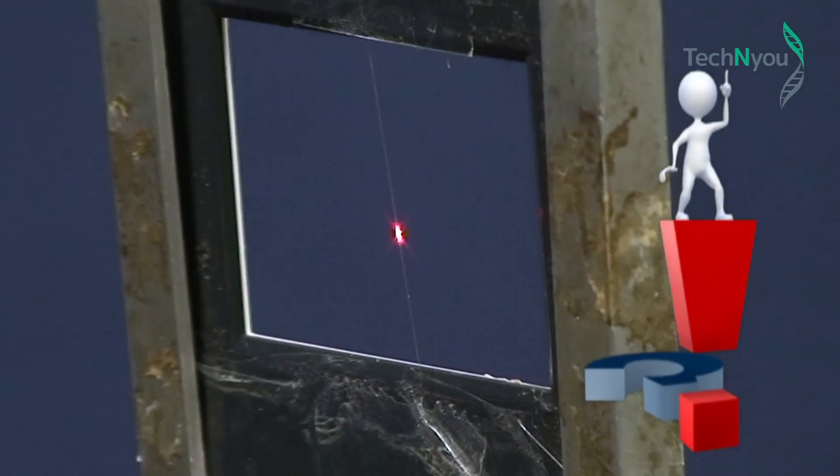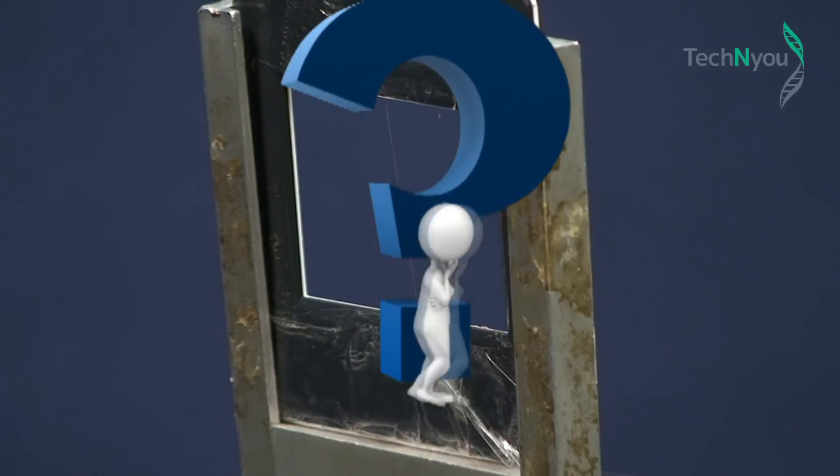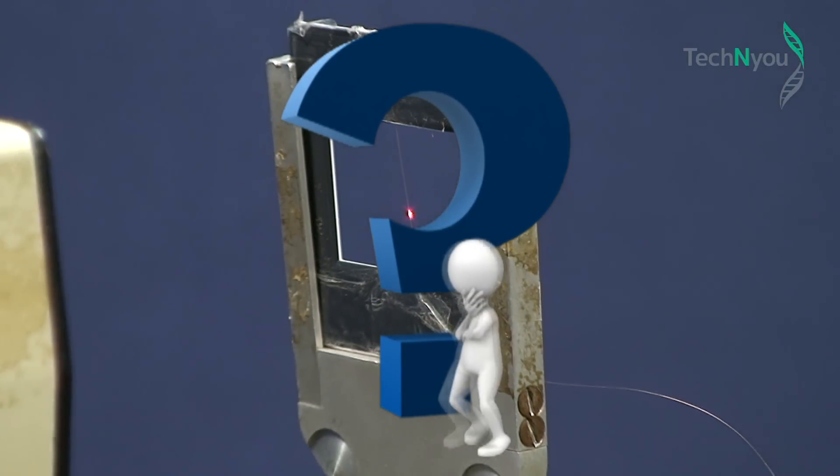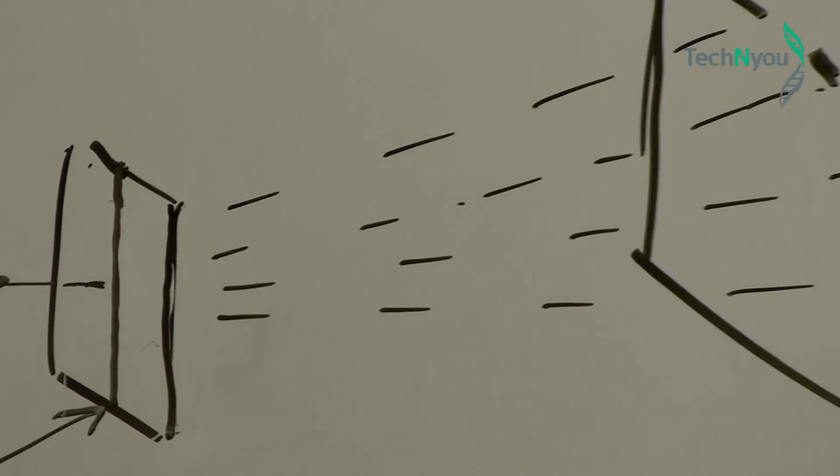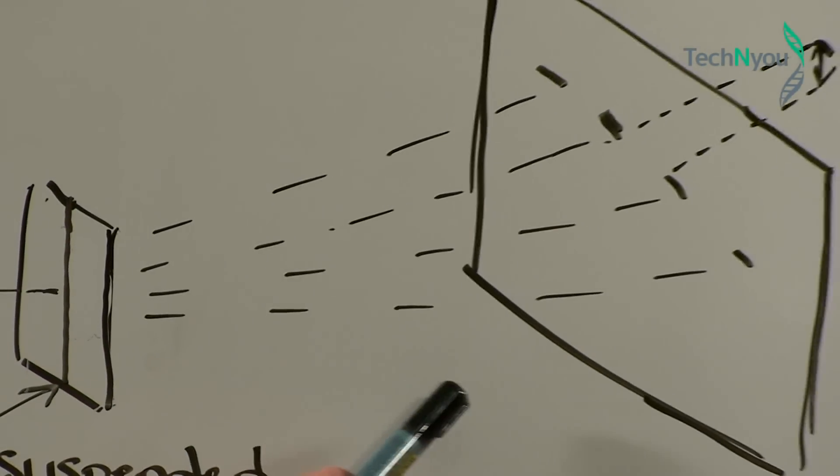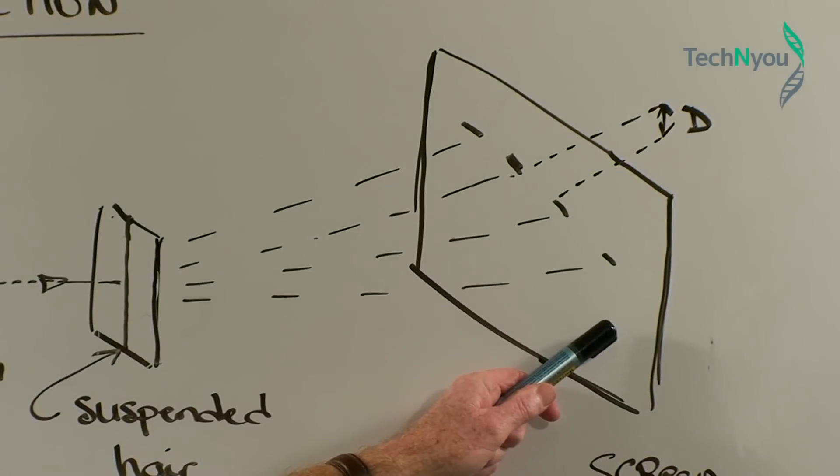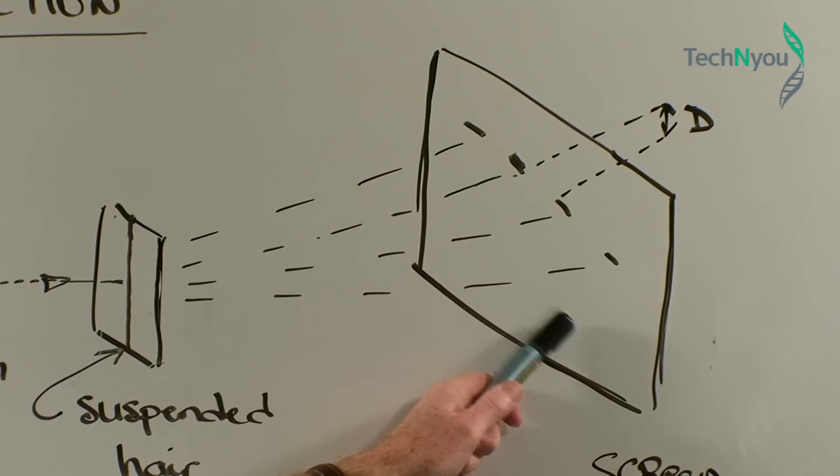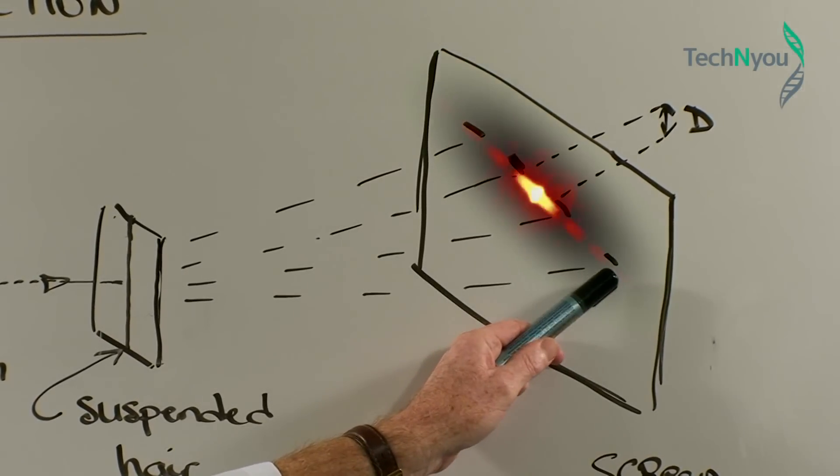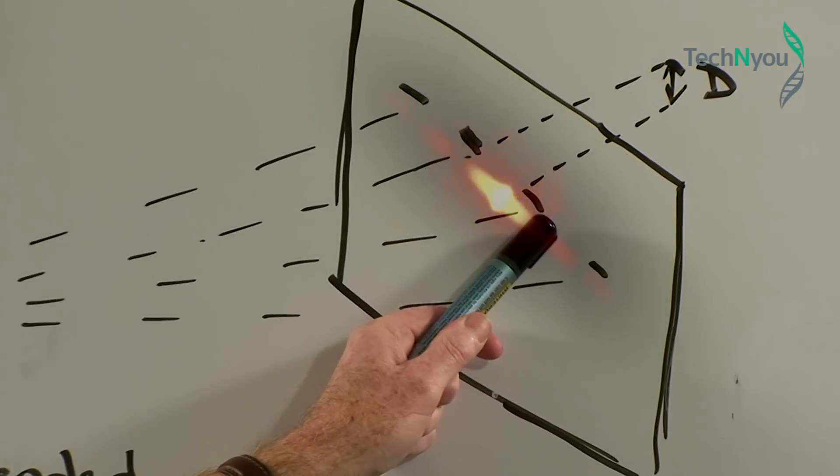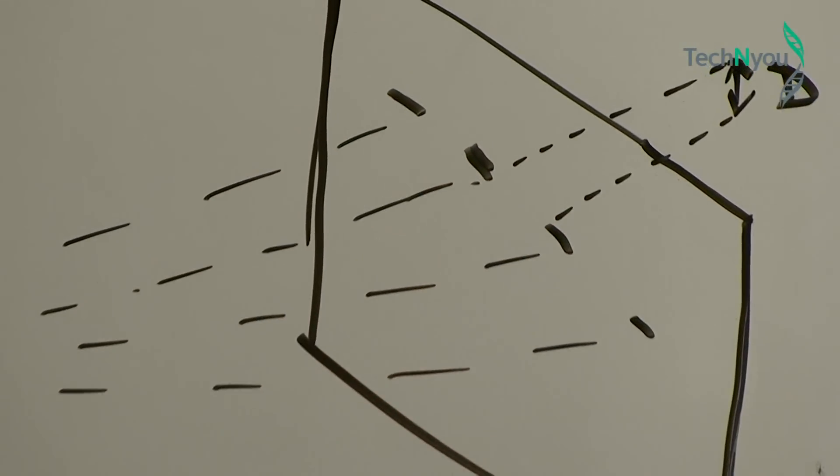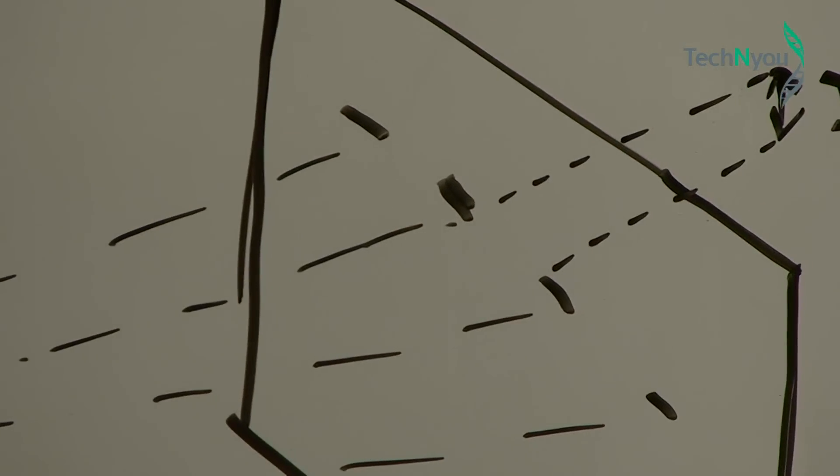That's how we do it. So, where do we go from here to find out the diameter of the hair? It's really just simple physics. First, we measure the distance from the suspended hair to the white board in centimetres. Then, we measure the distance between two adjacent bright spots. That is the two bright spots here, also measured in centimetres.